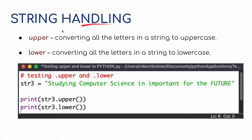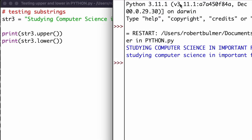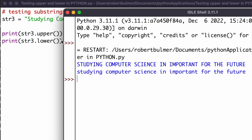Finally with string handling, I'm going to look at upper and lower — converting a string to uppercase and then to lowercase. I've got a variable string_three set to 'studying computer science is important for the future', and we're going to print .upper() and .lower(). Running this, upper puts everything in uppercase and lower puts everything in lowercase, which is useful for validation when people are inputting text.